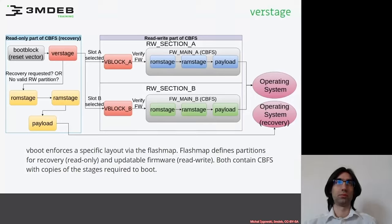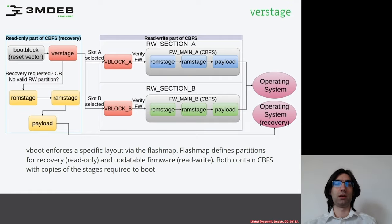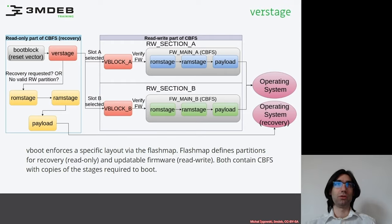So how a coreboot image layout may look like with VBoot. Basically there are many combinations of CBFS and FlashMap layouts with VBoot, and there are three main ones. We can have only a read-only part of CBFS, which is equivalent to a standard coreboot build, a read-only partition with one read-write partition, or with two read-write partitions. Each of these partitions should contain at least one CBFS partition inside.